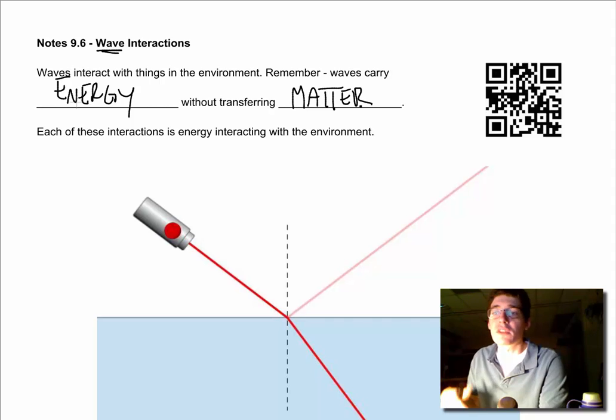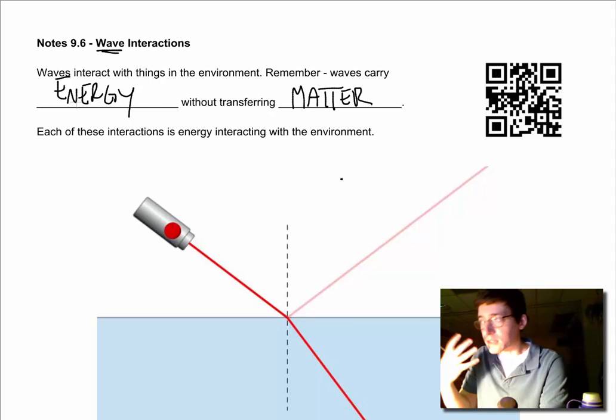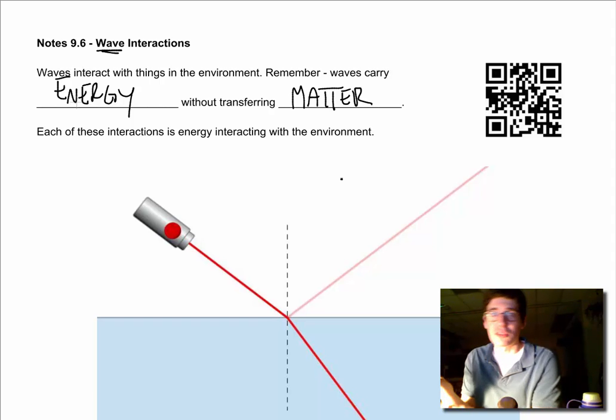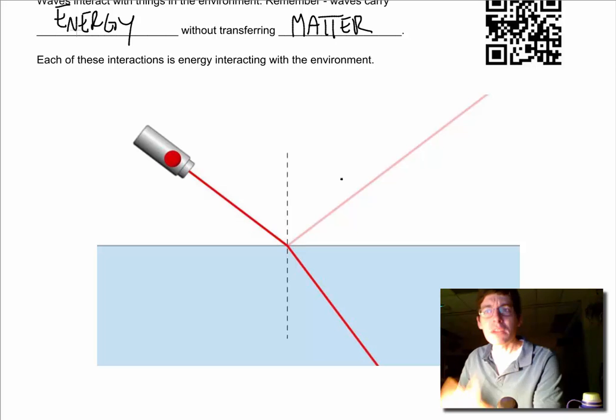Electromagnetic waves, those are vibrations of the EM field, the electromagnetic field. So it's not actually being carried by matter, but we're still transferring energy. I can see light energy when it hits my eyes. I can feel UV energy when I get a sunburn.